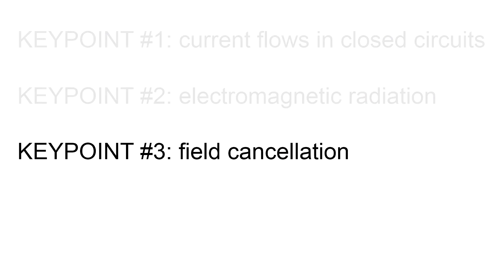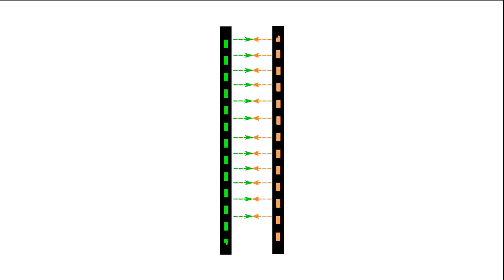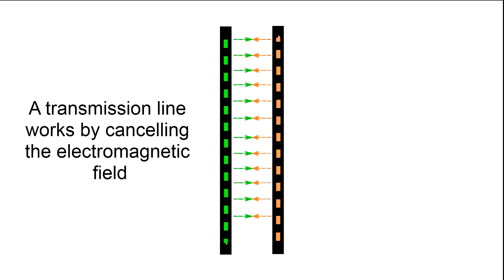Key point number three, field cancellation. If two wires carrying the same current with opposite signs are placed nearby, they generate two opposite fields that cancel each other. Since the fields are cancelled, these wires cannot radiate. We have created a transmission line.